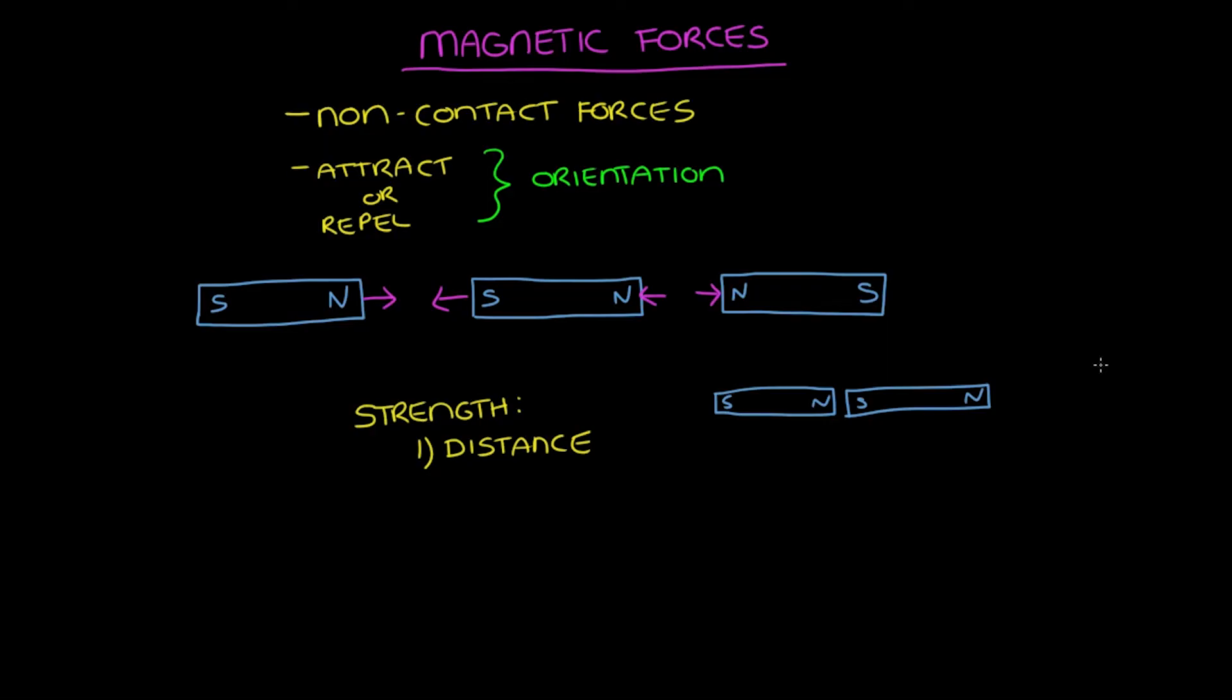This is because magnetic forces depend on distance. The closer the two magnets are together, the stronger the force between them. So as the distance decreases, the force increases. But the farther away they are, the weaker the magnetic force is. So distance increases, force decreases.